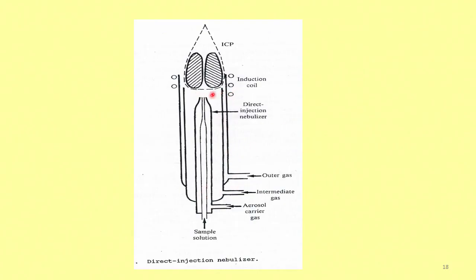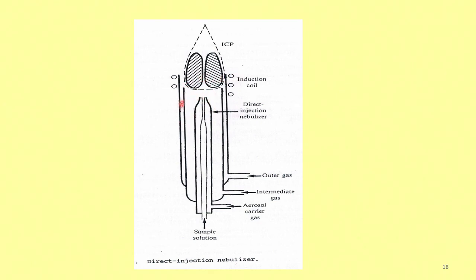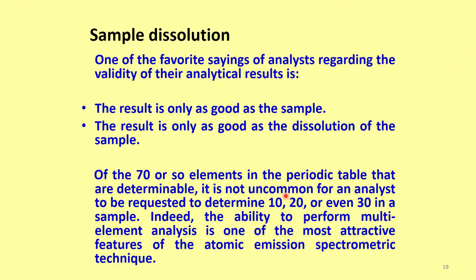In a direct injection nebulizer, the sample solution is in the innermost concentric tube, next is the argon aerosol flow, then the outer intermediate argon gas. There is complete gas movement in all three concentric tubes; the sample gets converted to aerosol at the tip edge, which serves directly as the nebulizer, and the aerosol enters the plasma. This covers how to introduce the sample and the different nebulizer designs.